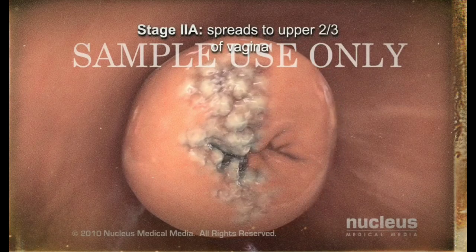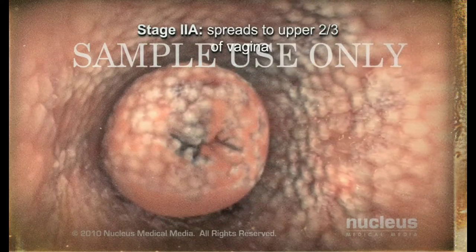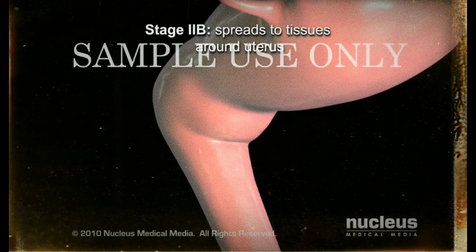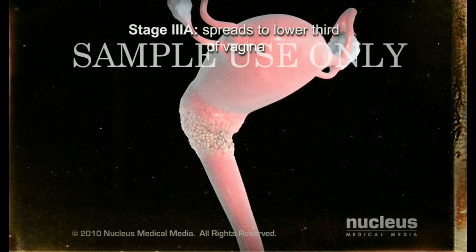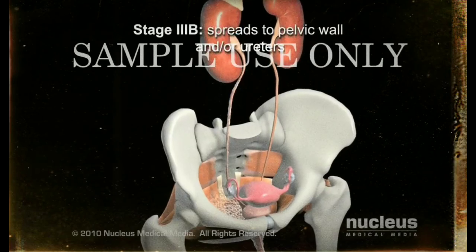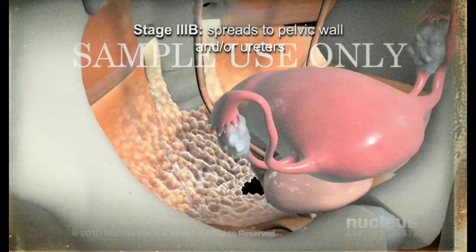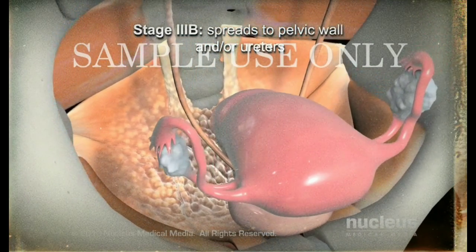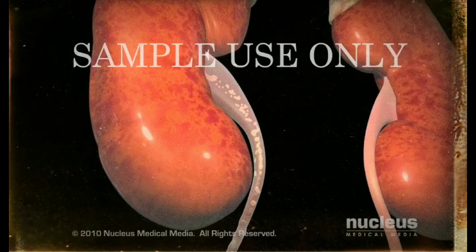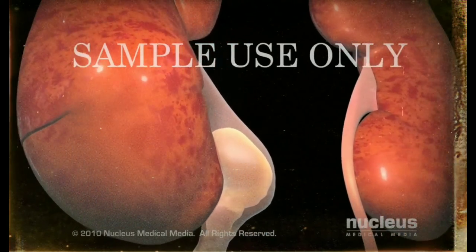In stage 2a, the tumor spreads beyond the cervix to the upper two-thirds of the vagina but not to the tissues around the uterus. In stage 2b, the cancer spreads to the tissues around the uterus. In stage 3a, the tumor spreads to the lower third of the vagina. In stage 3b, the cancer spreads to the pelvic wall, the lining of the body wall cavity between the hips, and or may spread to the ureters — the tubes that carry urine away from the kidneys to the bladder. If the flow of urine is blocked, the kidney can become enlarged or stop working.